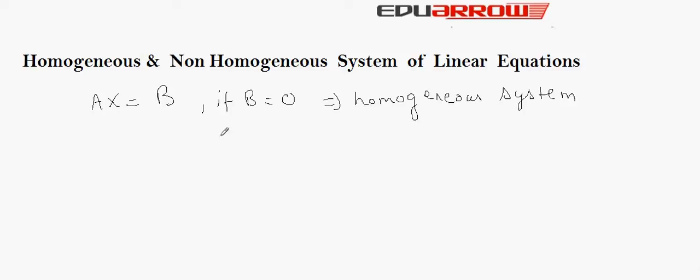Otherwise, if B ≠ 0, the system is known as a non-homogeneous system.